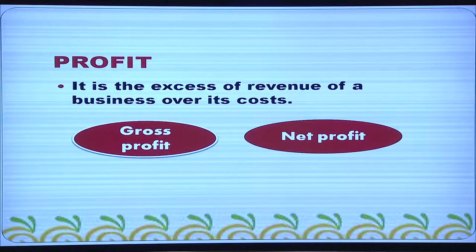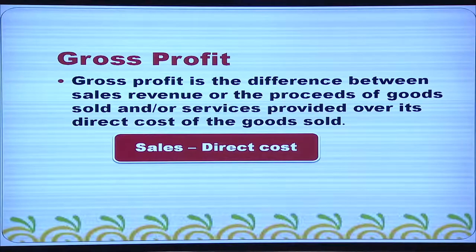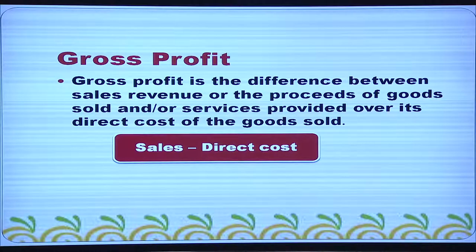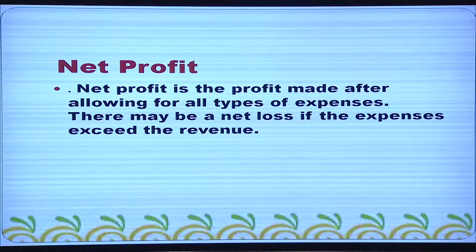Profit is the excess of revenue of a business over its cost. Profit can be gross profit or net profit. Sales minus direct cost will give you gross profit — the difference between sales revenue and the direct cost of goods sold. Net profit is the profit made after allowing all types of expenses. Gross profit minus indirect expenses will give you net profit. There may be a net loss if the expenses exceed the revenue.